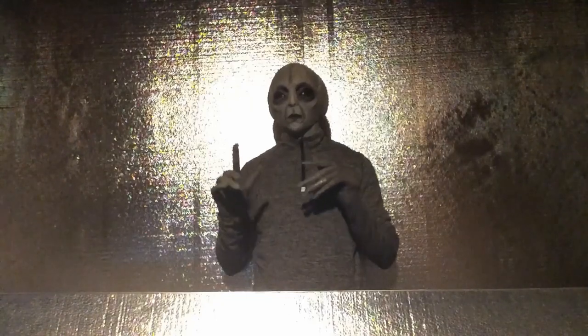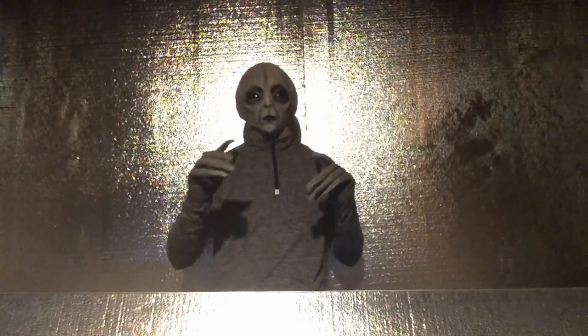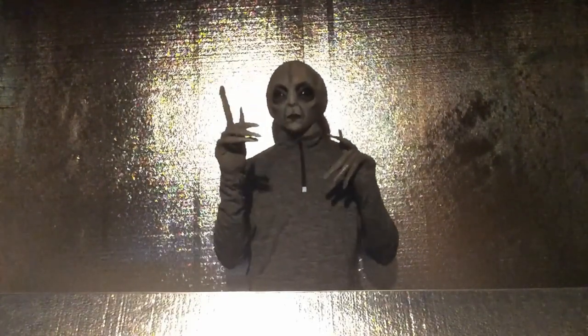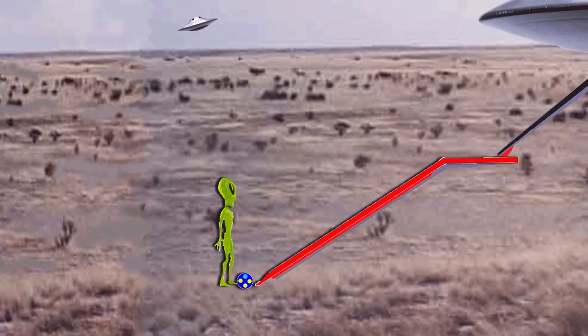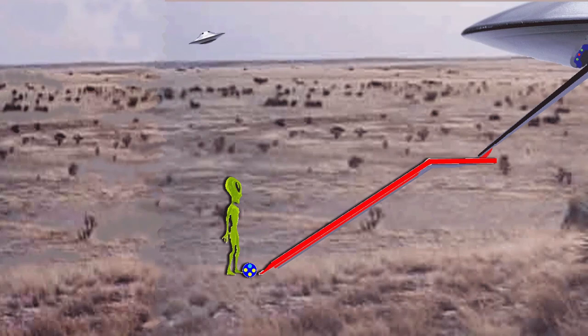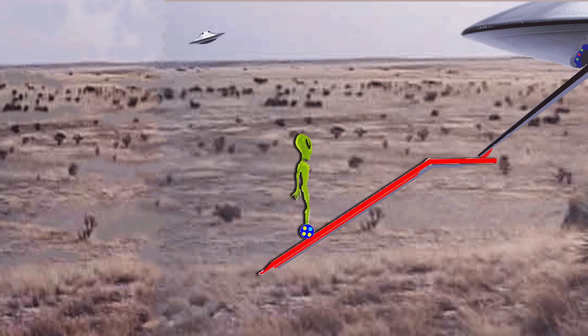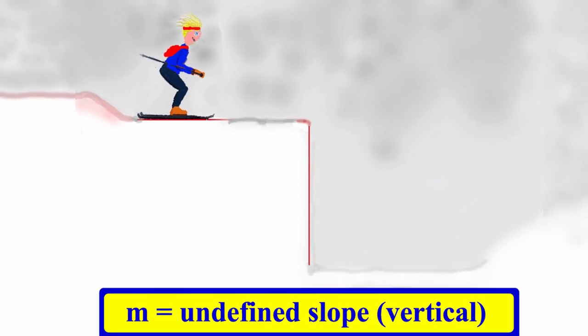It is important to remember the four types of lines. To recap, type one is the positive slope. It moves to a positive high point as you read the line from left to right. When an alien travels the slope, rather than using a teleportation machine, he moves up the line from left to right.